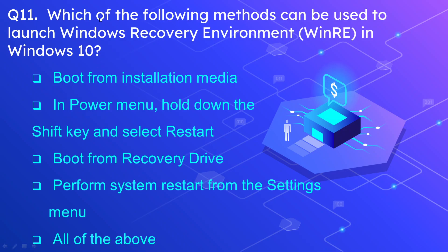Question number 11: Which of the following methods can be used to launch the Windows Recovery Environment in Windows 10? The options are: boot from installation media; in the power menu, hold down the Shift key and select Restart; boot from recovery drive; perform a system restart from the Settings menu; or all of the above. The correct option is all of the above.